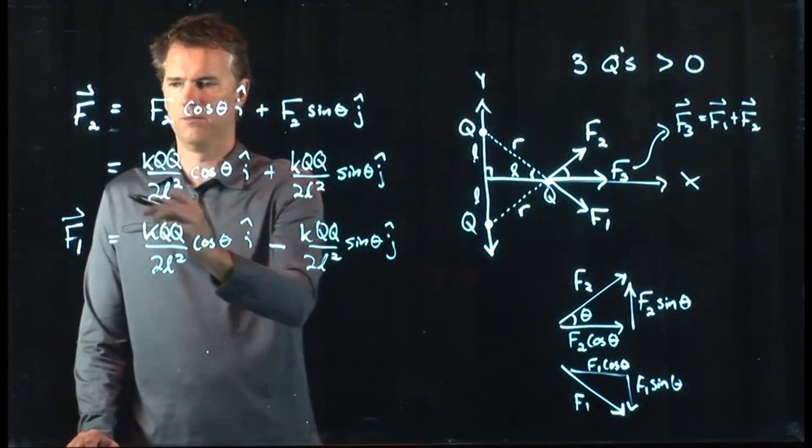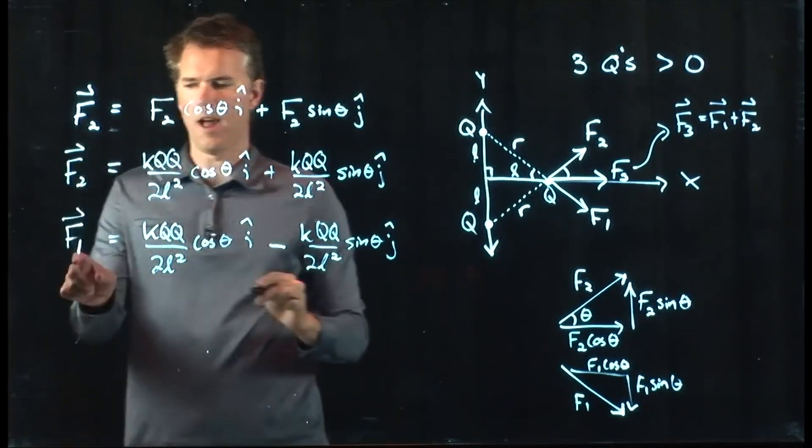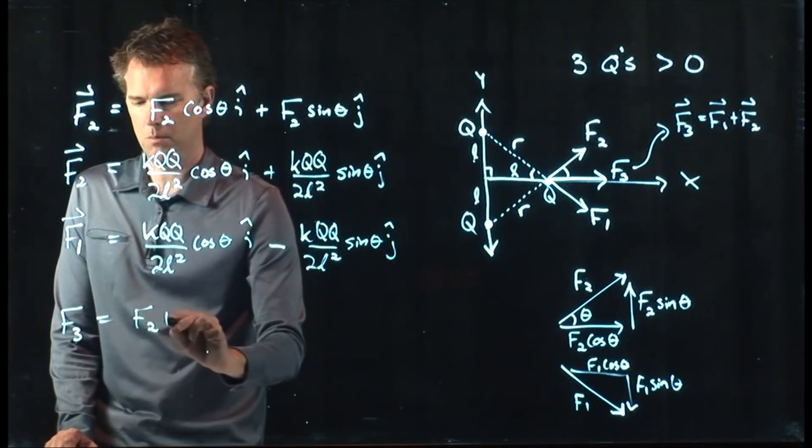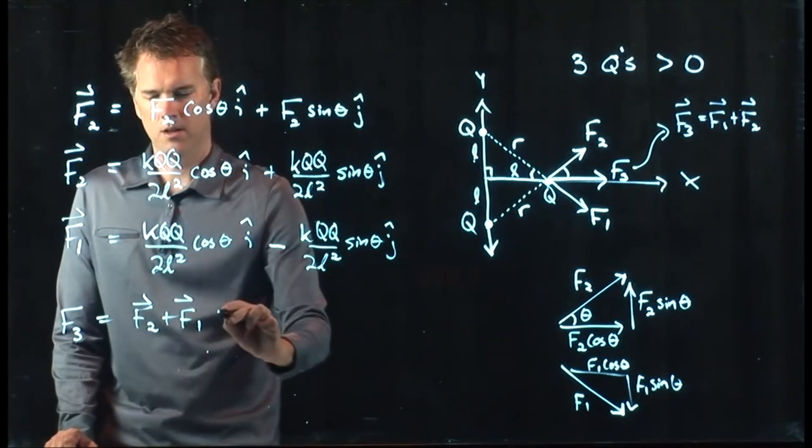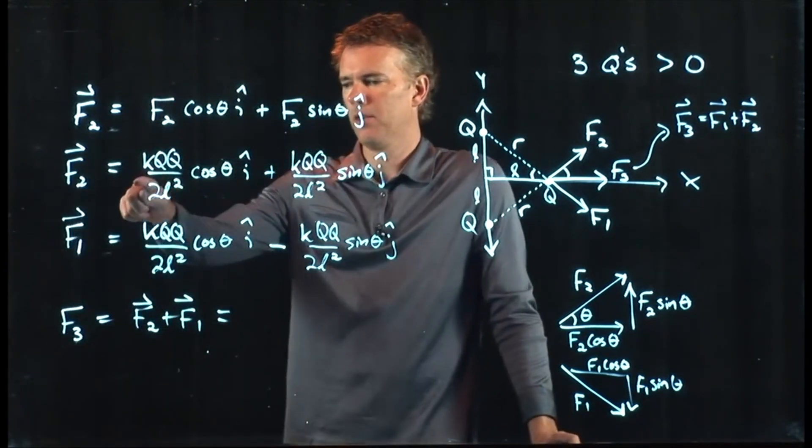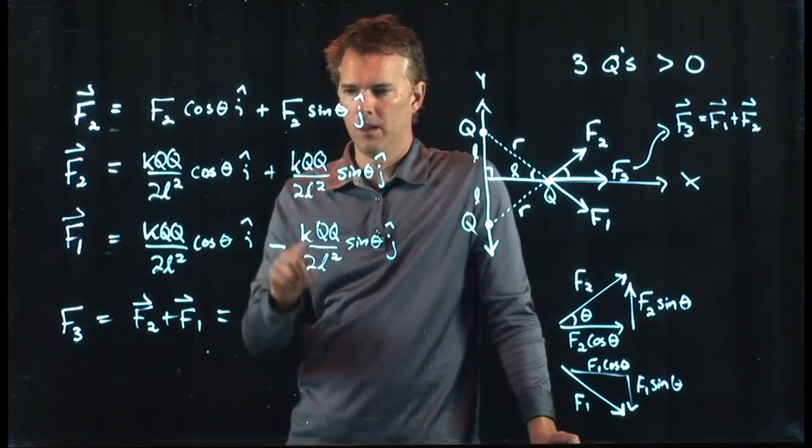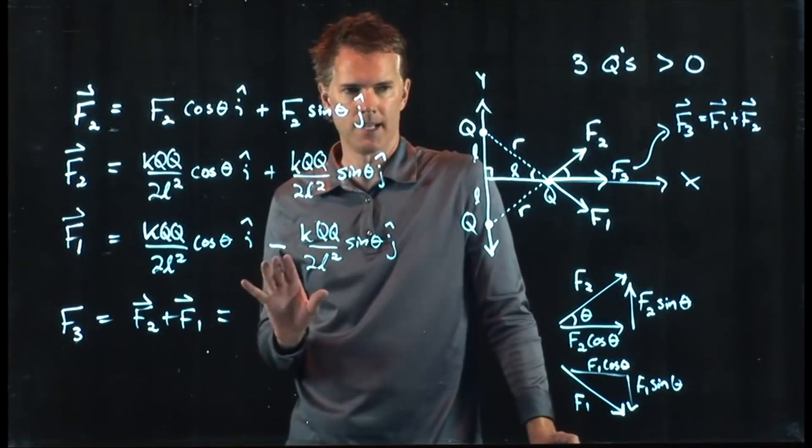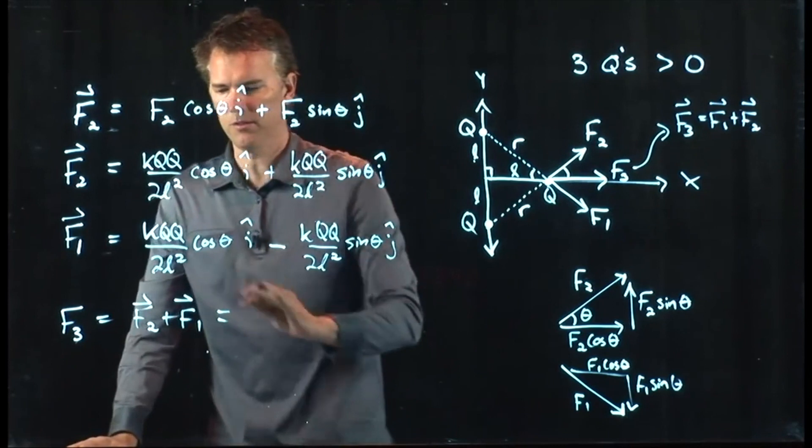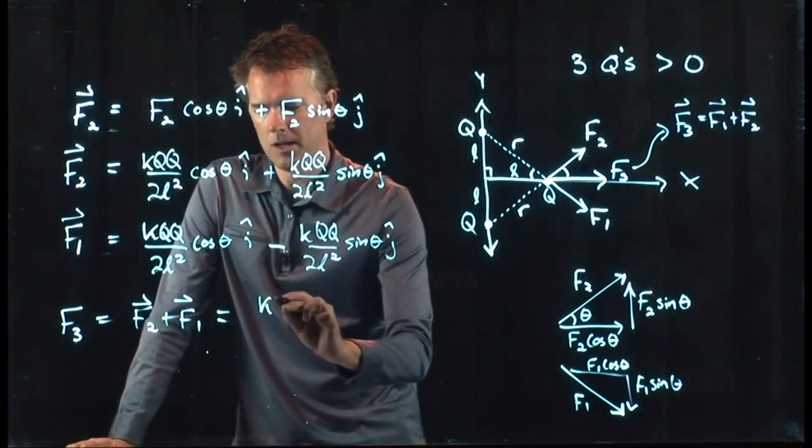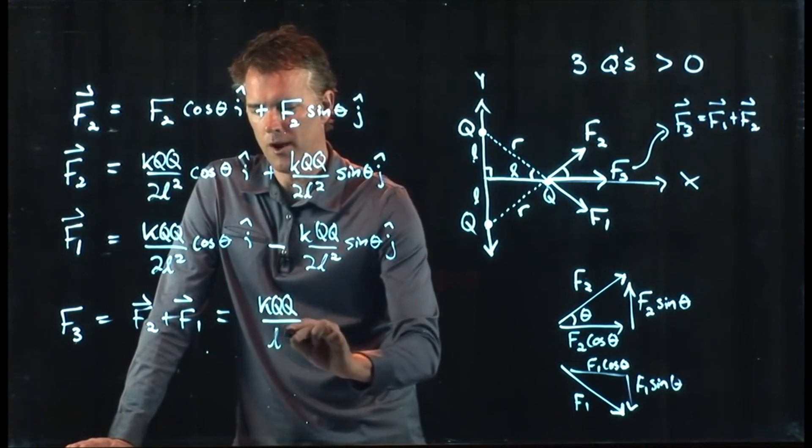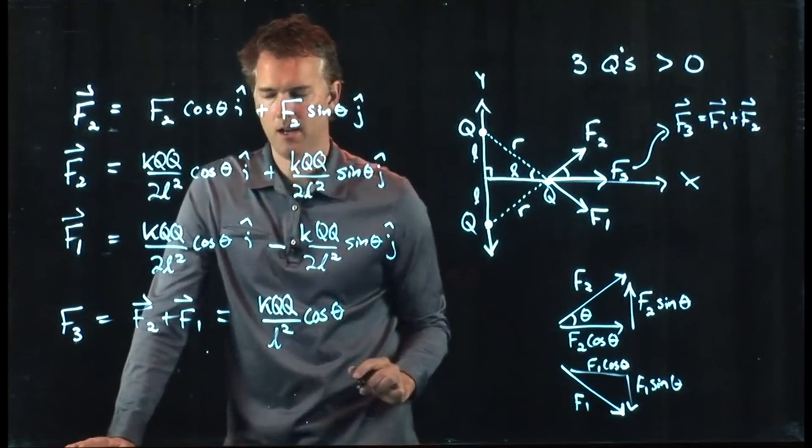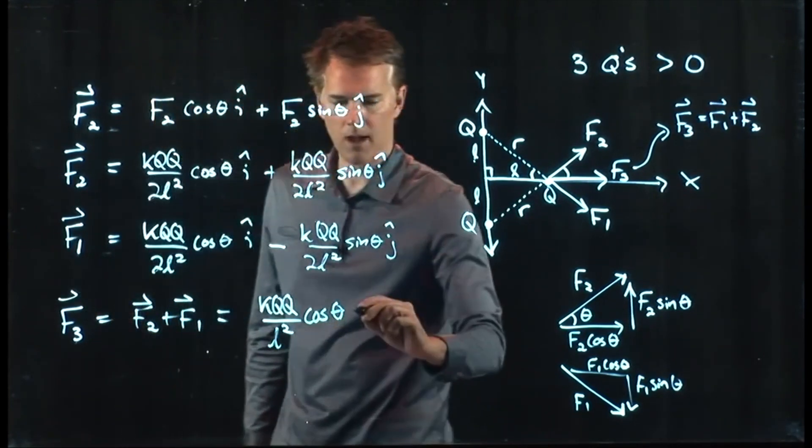Here's F2. Here's F1. So F3 is F2 plus F1. And look what happens. If I add these up, these two are the same. These two are equal and opposite. And so the sine components, in fact, drop out entirely. And we just end up with this. And since we have two of them, we can double it. KQQ over L squared. The two in the bottom goes away. Cosine theta. And the direction here is I hat.